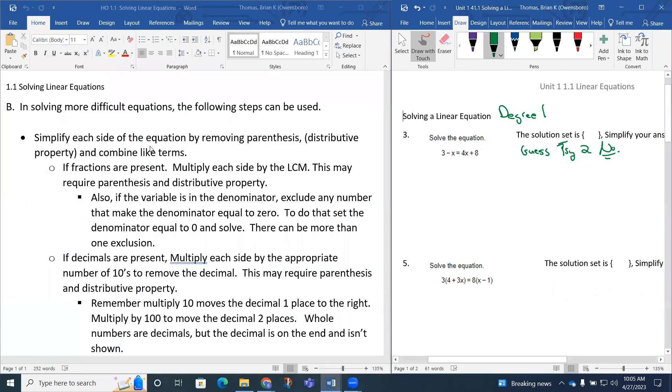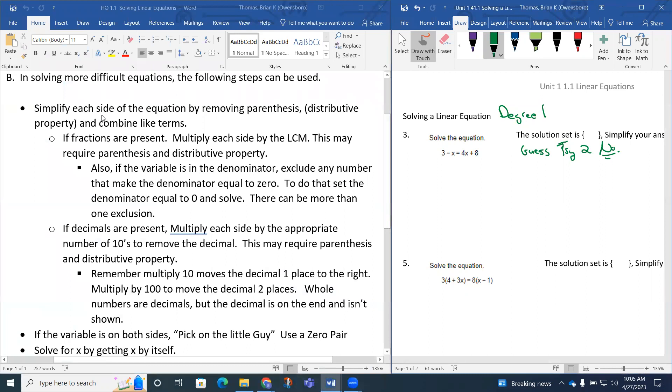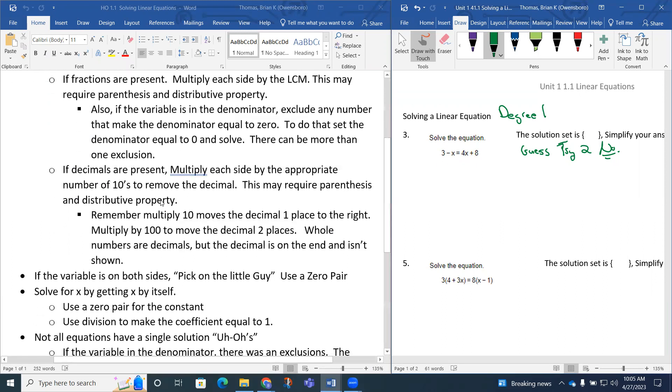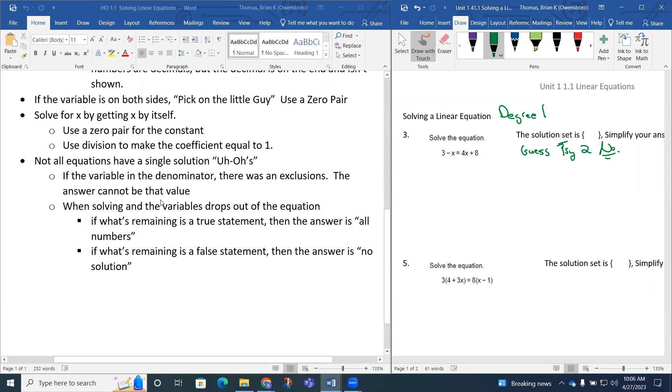If I have more difficult equations, we can follow these steps. The first step is to simplify each side of the equation by removing parentheses. We may also have to use distributive property or combine like terms. If we look at this expression, you have 3 and a negative x on the left side. Those are not like terms. On the right side, you have 4x and 8. Those are not like terms. So each side of the equation is already simplified.